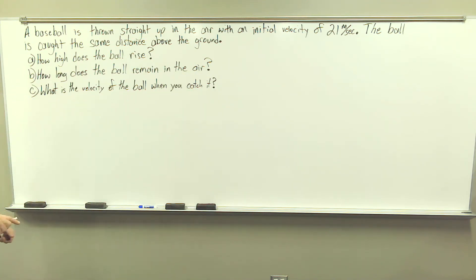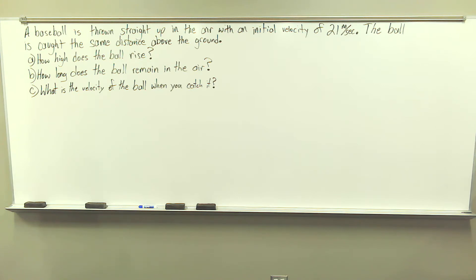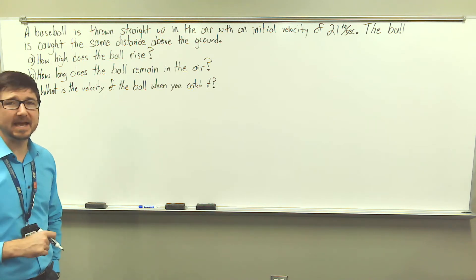A baseball is thrown straight up in the air with an initial velocity of 21 meters per second. The ball is caught at the same distance above the ground. Part A: how high does the ball rise? Part B: how long does the ball remain in the air? And Part C: what is the velocity of the ball when you catch it?